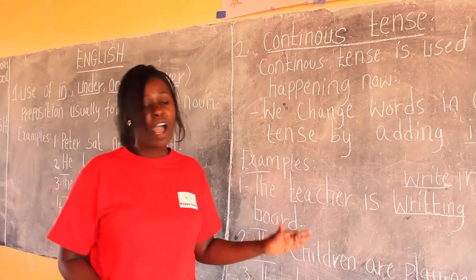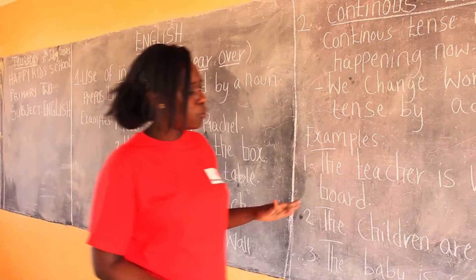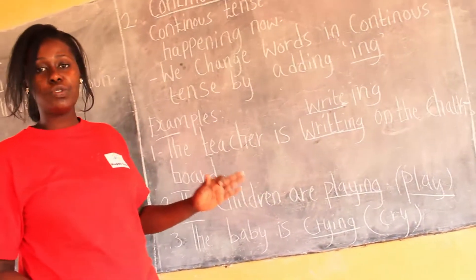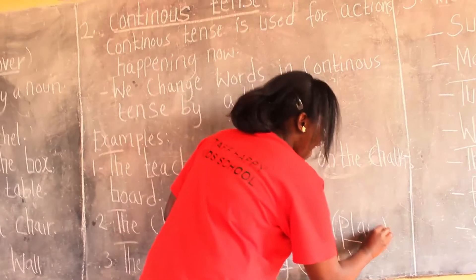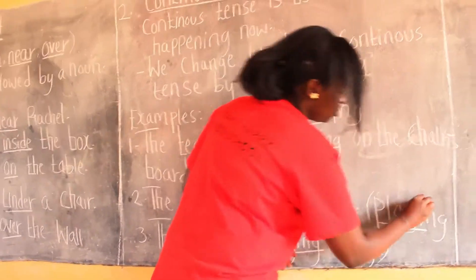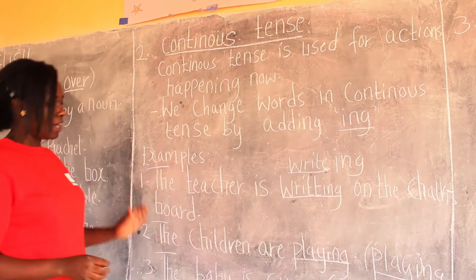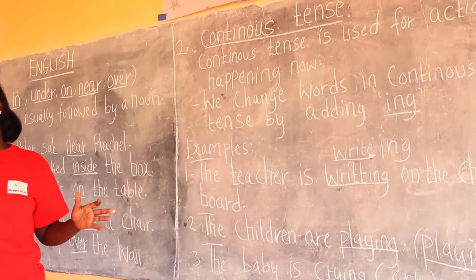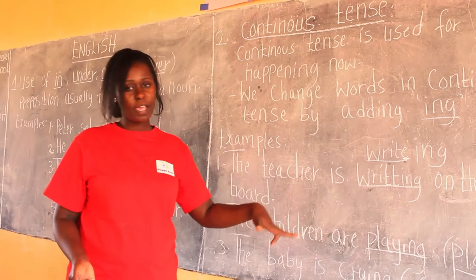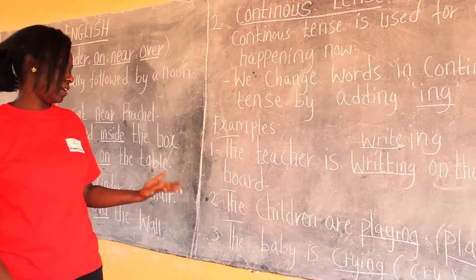For example, we have: the children are playing. Which word are we going to change? The word 'play.' What are we going to do? We are going to add I-N-G to make it continuous tense. What are the children doing right now? They are playing. Where are they playing? Maybe they are playing outside the classroom.